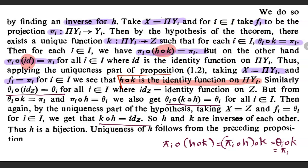So h composition k is the identity function on product yi and k composition h is the identity function on z. So h and k are inverses of each other. Thus h is a bijection. And uniqueness follows from the characterization of the evaluation function.